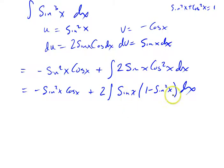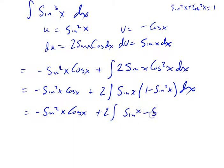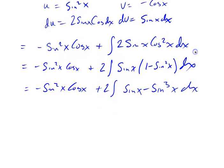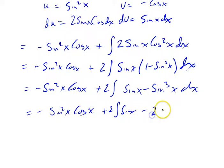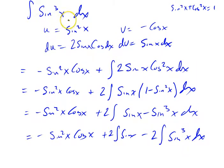I'm going to distribute this through and split the integral up. So I've got minus sine squared x cosine x plus 2 times the integral of sine x minus sine cubed x dx. Now I'm going to use one of the properties of integrals and split this integral into 2: minus sine squared x cosine x plus 2 times the integral of sine x, minus 2 times the integral of sine cubed x dx. One of the things you might notice is that I've gotten back to the integral I started with — this whole problem started with sine cubed x, and now I've got an integral of sine cubed x.